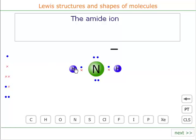Now this means that overall the structure, the ion, has got one, two, three, four regions of electron density. These four regions of electron density will adopt a tetrahedral shape.